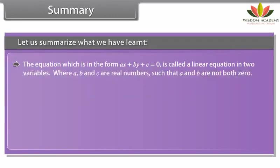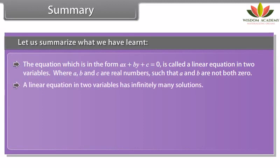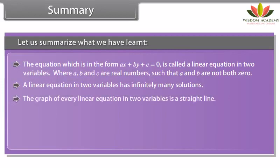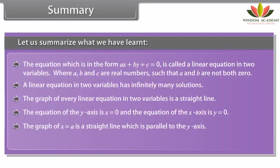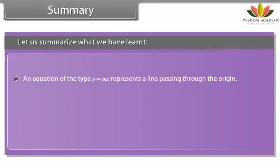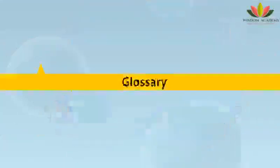Did you know? The reason a degree-1 polynomial equation AX plus BY plus C equals 0 is called a linear equation is that its geometrical representation is a straight line. The graph of an equation of the form Y equals KX is a line which always passes through the origin. To summarize: any equation in the form AX plus BY plus C equals 0, where A, B, C are real numbers and A and B are not both zero, is a linear equation in two variables, and it has infinitely many solutions.